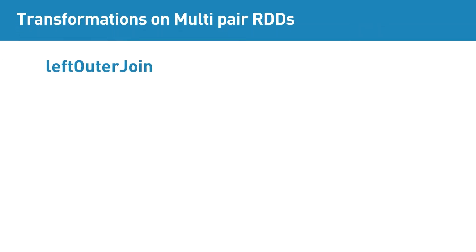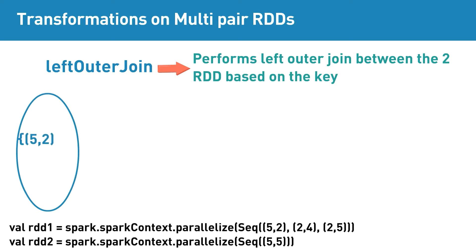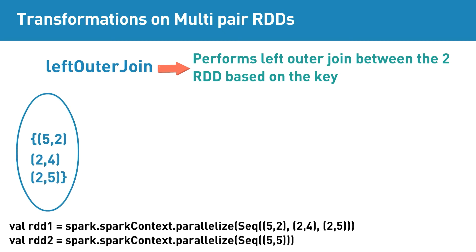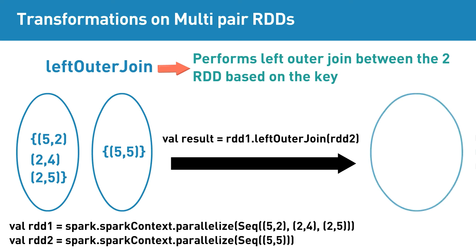Left outer join is a multi-pair RDD transformation that does a left outer join between the two RDDs based on the key. As you know, left outer join returns all the elements of the left dataset and returns only the matching elements from the right dataset. If input RDD1 contains elements 5-2, 2-4, 2-5, and input RDD2 contains 5-5, then applying left outer join transformation will return elements as highlighted.